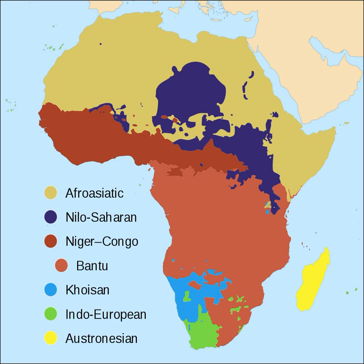A fair number of unclassified languages are reported in Africa. Many remain unclassified simply for lack of data. Among the better investigated ones that continue to resist easy classification are: possibly Afroasiatic — Ongota, Gomba; possibly Nilo-Saharan — Shabo; possibly Niger-Congo — Jalaa, Mbre, Bayot; possibly Khoisan — Kwadi; and unknown — Laal, Mpra. Jalaa is perhaps the most likely to be an isolate.